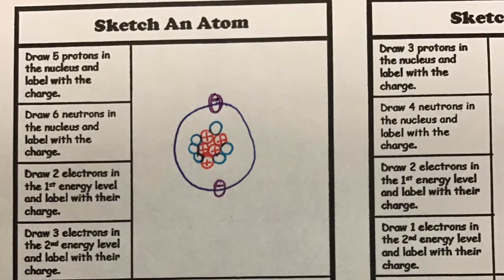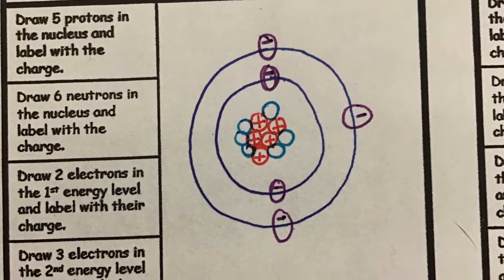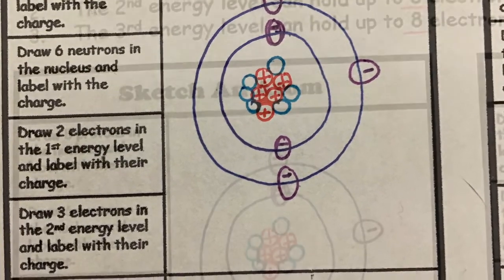Now it is time to draw in our rings or levels to be able to add our electrons. Draw your first ring around the nucleus. Our instructions tell us to draw two electrons in this first energy level and label them with a negative charge. Next draw a second energy level or ring and draw three electrons in this level with their negative charges.